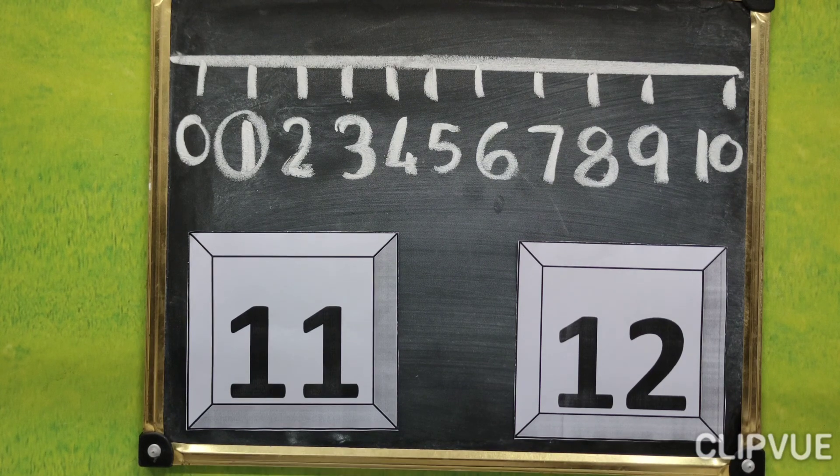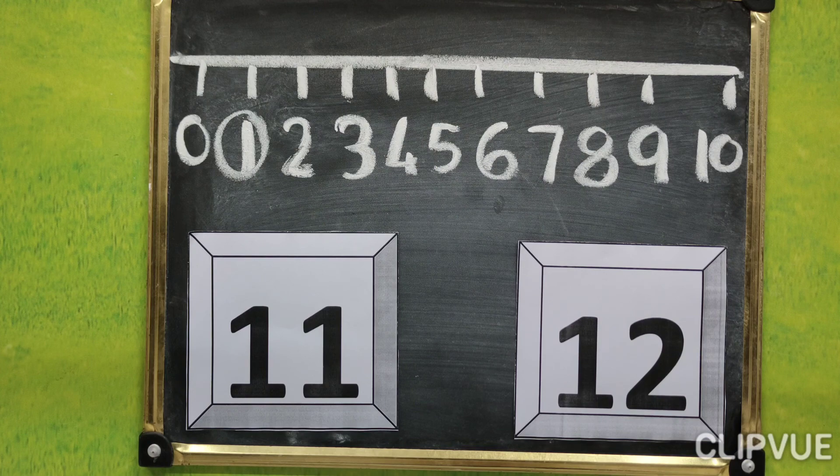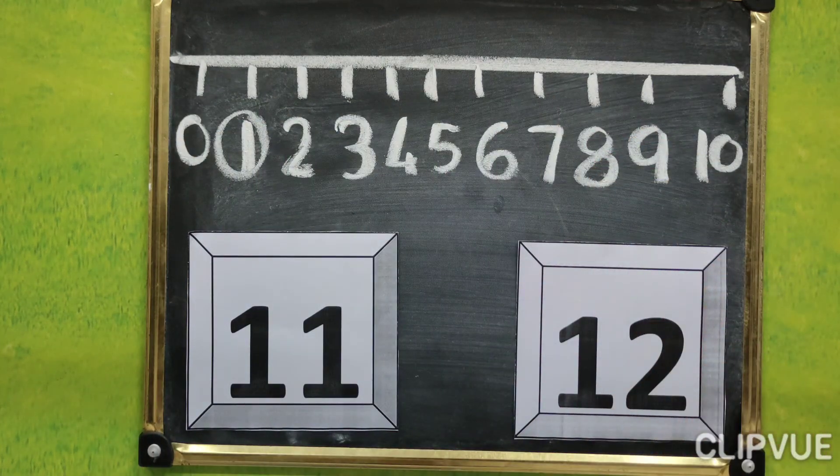Understood? In this concept, which comes next, this one is big number. Which comes next, this one is big number.